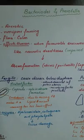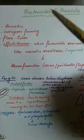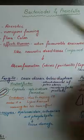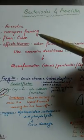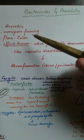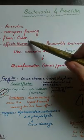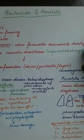Bacteroides and Prevotella. These organisms are anaerobic, meaning they grow well without oxygen. They are also non-spore forming and are part of the normal flora of the colon. They affect humans upon favorable environments.